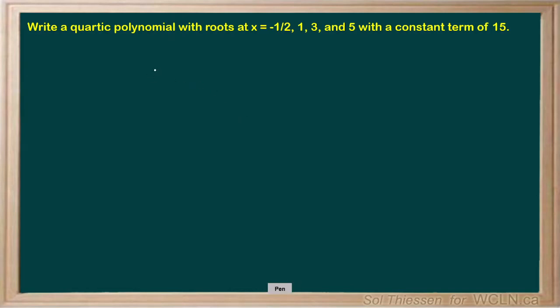Write a quartic polynomial with roots at x equals negative one half, 1, 3, and 5 with a constant term of 15.